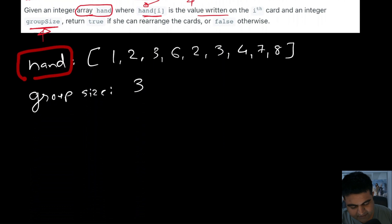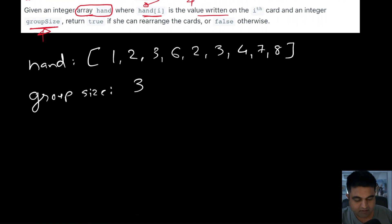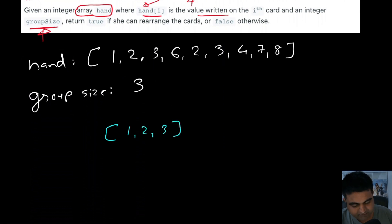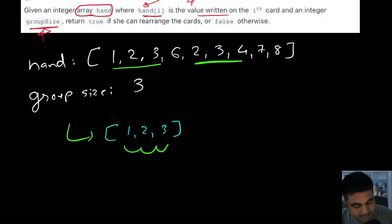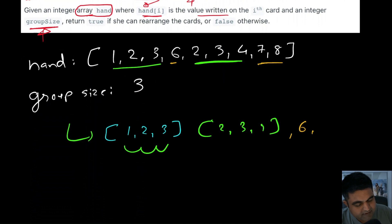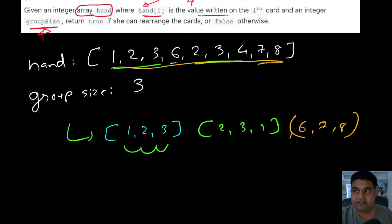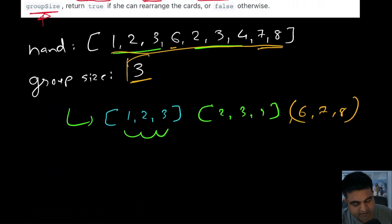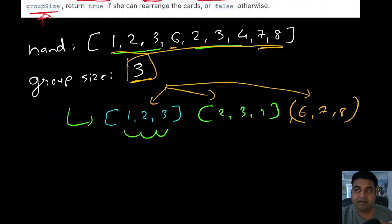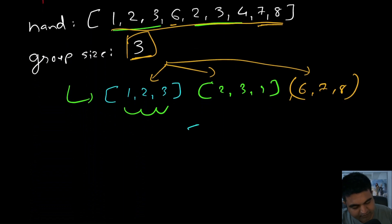Let's understand this with an example. Say we are given the hand like this and the groupSize is three. The first group we can create is cards one, two, three — every card inside the group has to be consecutive. Second group is two, three, and four. Third group is six, seven, and eight. We used all the cards and divided them into groups of size three with consecutive values, so we return true.